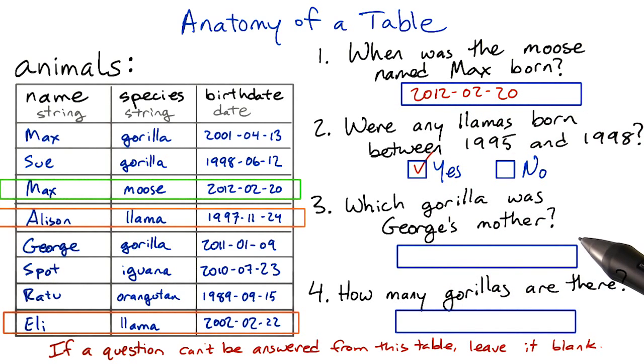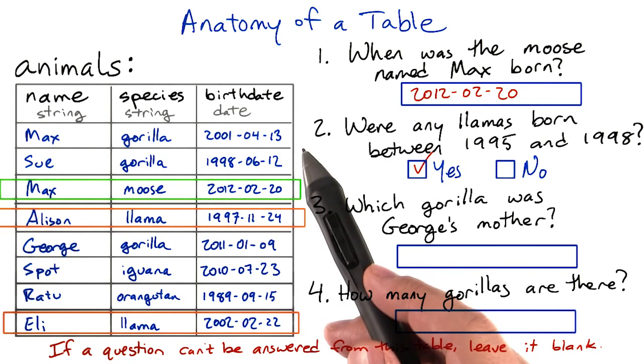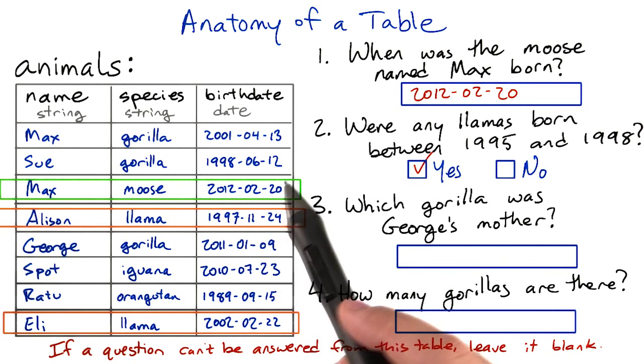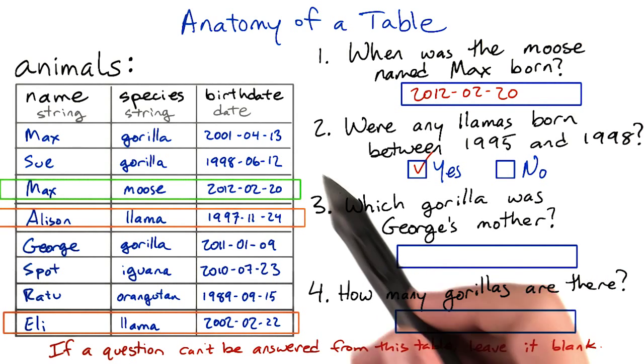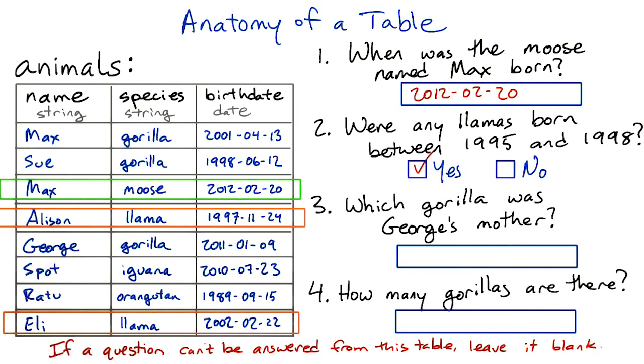Number three, which gorilla was George's mother? Nothing in this table tells us anything about the family relationships between gorillas or any of the other animals. So we can't tell which gorilla was George's mother. We might guess that it was Sue, but we don't know. So this should be left blank.